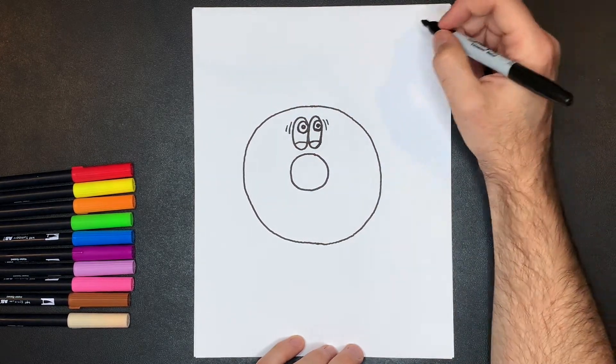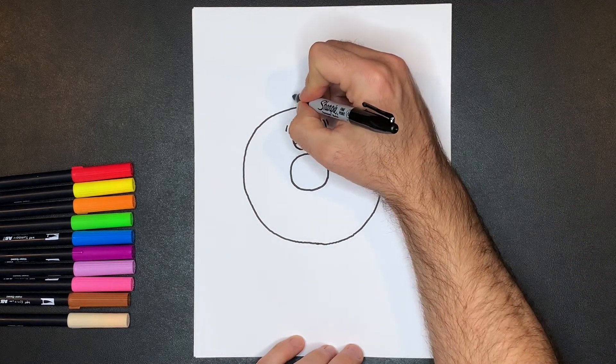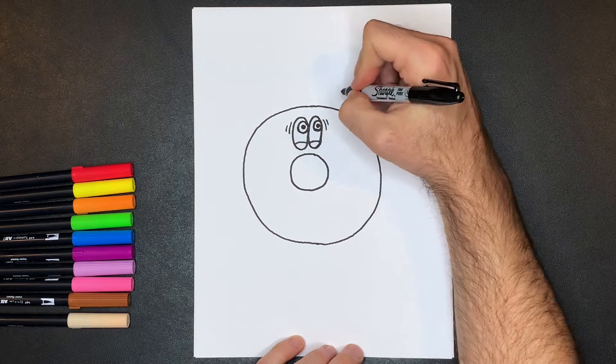Next we're going to draw the donut's eyebrows because yes, donuts have eyebrows. So we're going to make them kind of oval shaped because they're going to be sprinkle eyebrows.